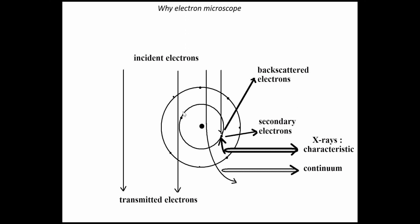Looking at our atom: there is a nucleus with electrons in the outer shell. Some high-energy electrons from the beam will displace the outer electrons. Once displaced, those electrons come out — these are secondary electrons. Secondary electrons displaced from the outer surface are highly important for getting an SEM image.